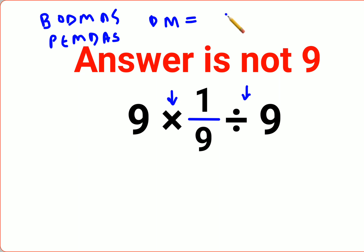So first we will do 9 × 1/9. This gets cancelled, and then it is divided by 9. So basically you're getting 1 ÷ 9. So the answer is supposed to be 1/9. I hope this is very clear to everyone.